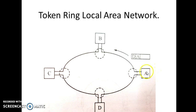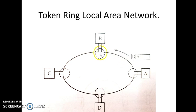After Station A removes the frame from the ring, it releases the token. Since B is next in order, B receives the token. If B has data to send to any other station, it must capture the token and send a frame. If Station B doesn't want to send a frame, it simply passes the token to the next station. This is how the Token Ring process works.